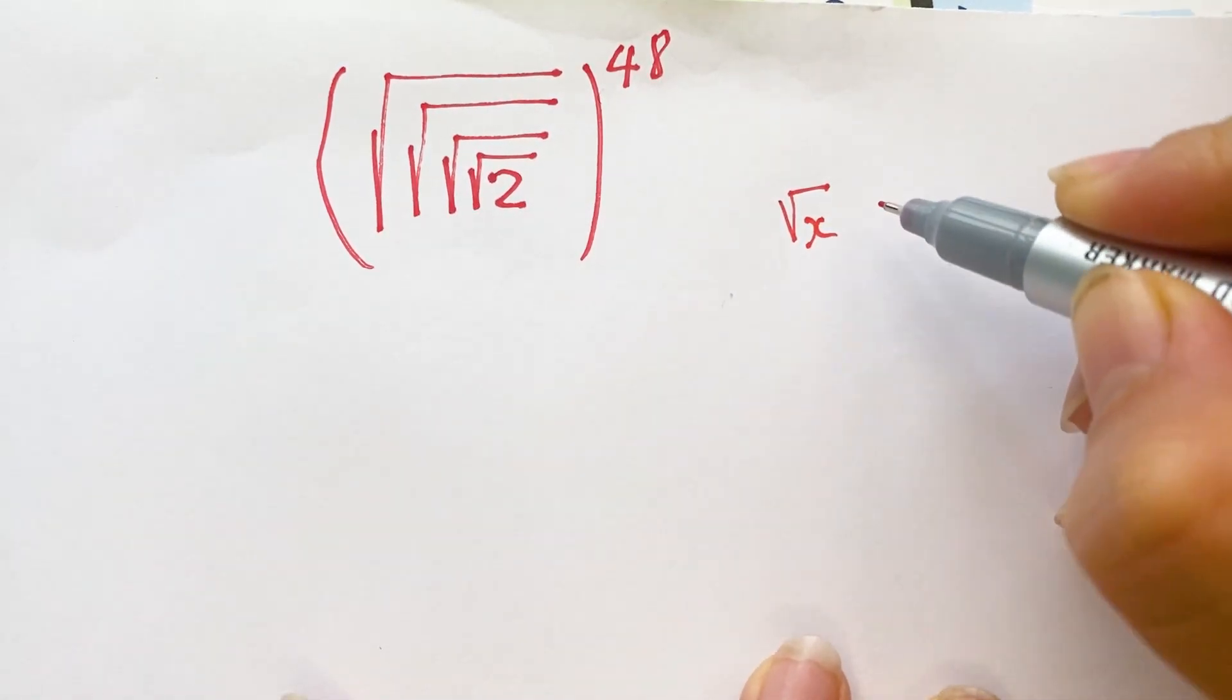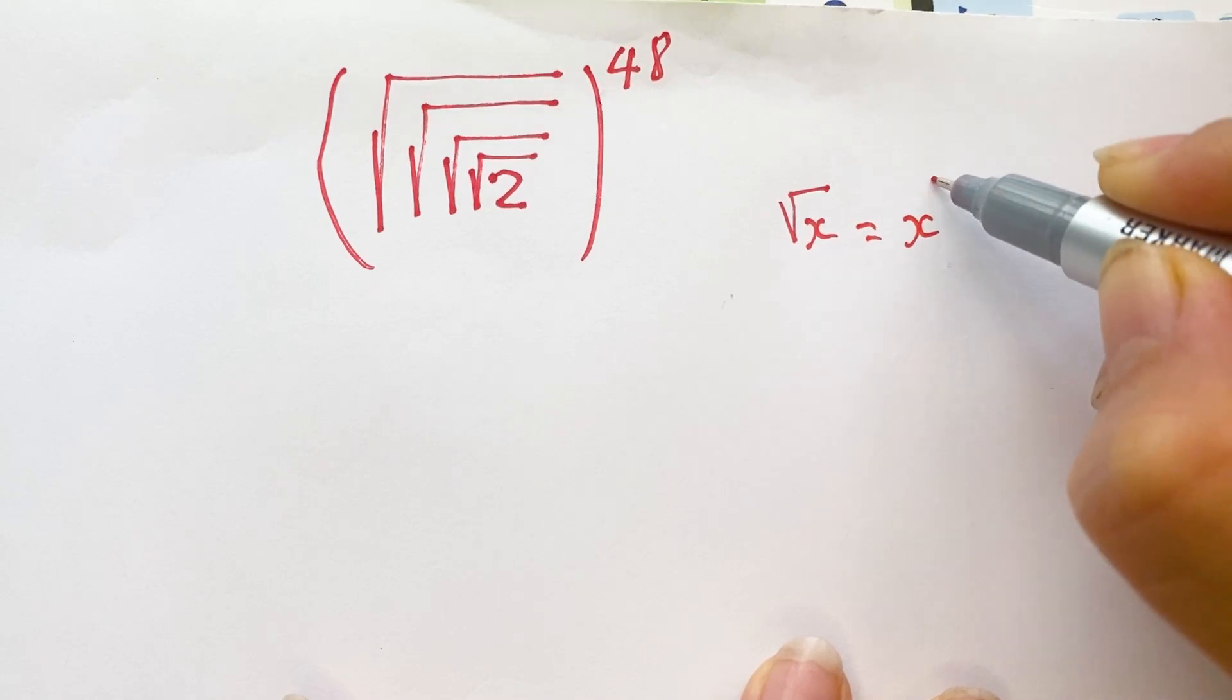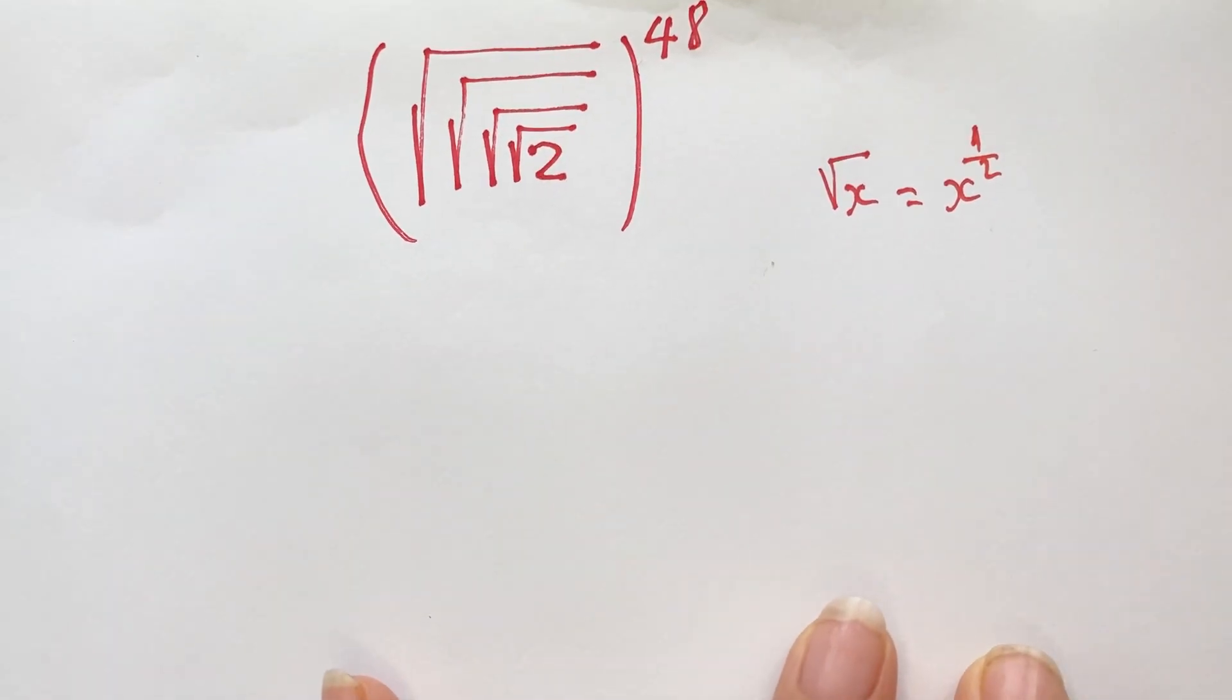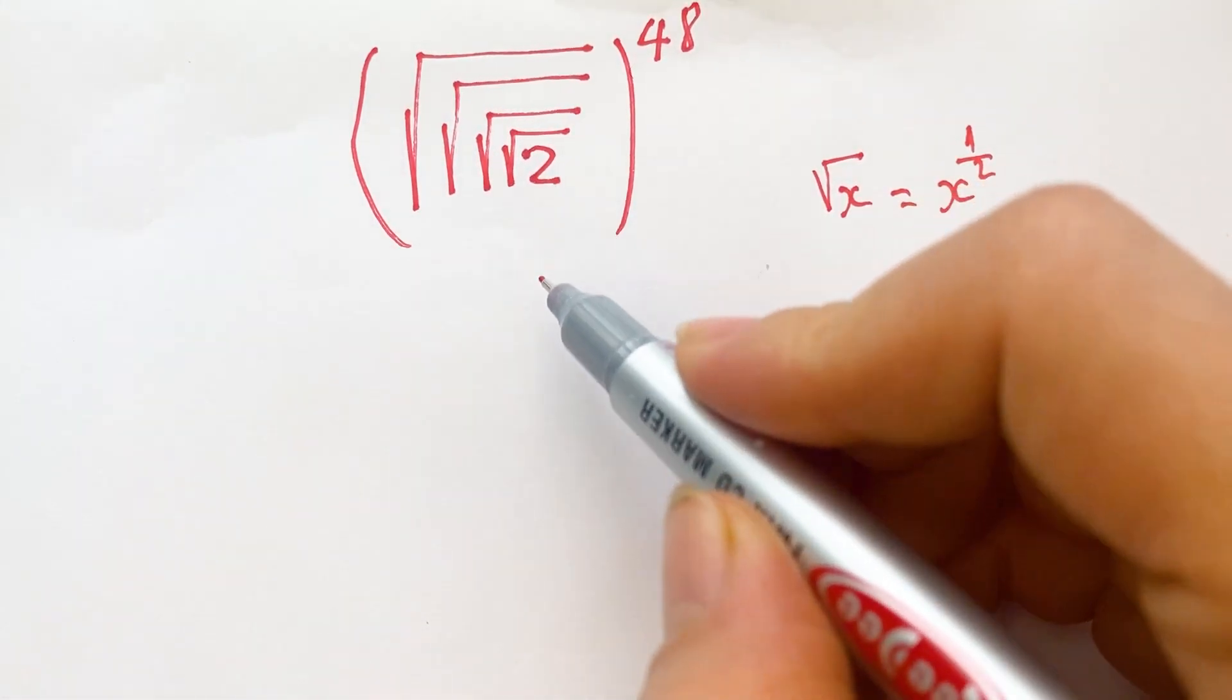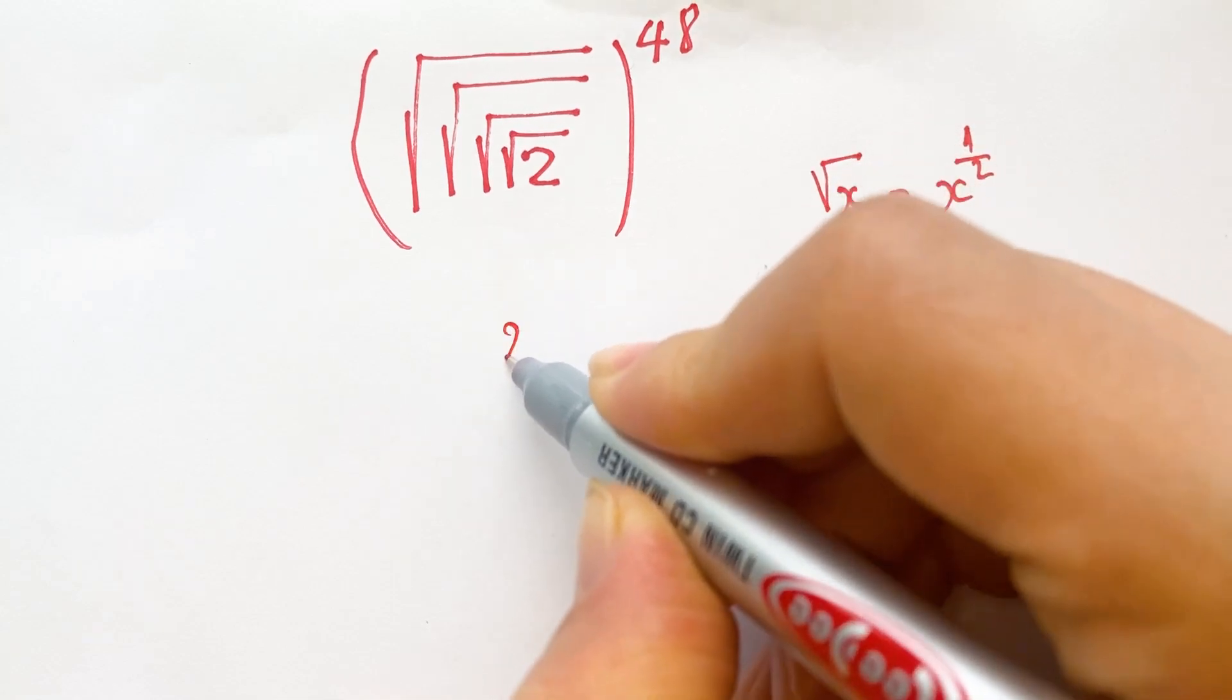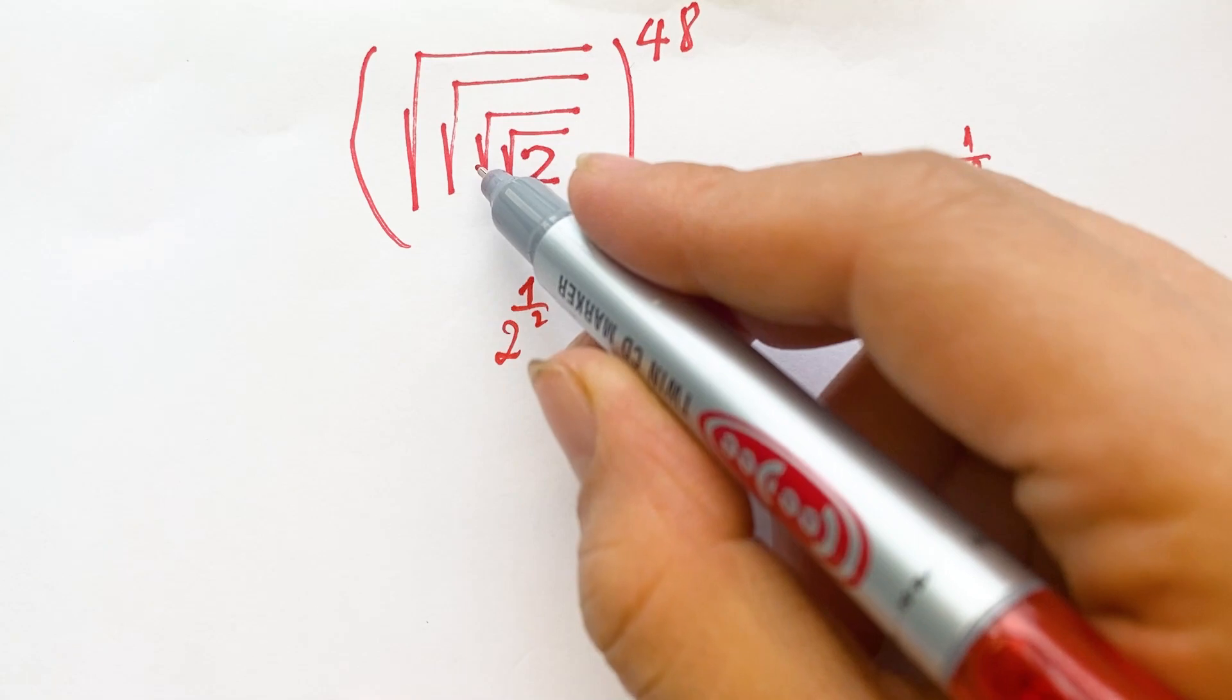Square root of x can be rewritten as x to the power of one-half. Therefore, you can write that the square root of two can be rewritten as two to the power of one-half.